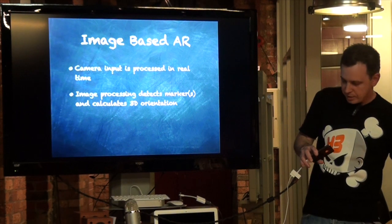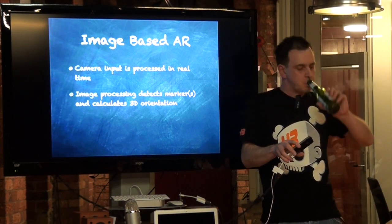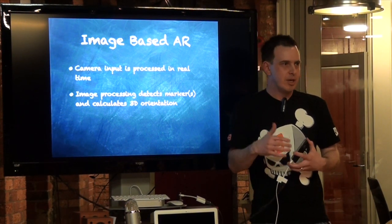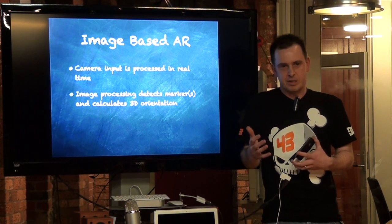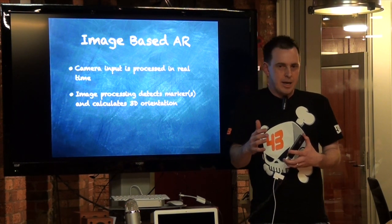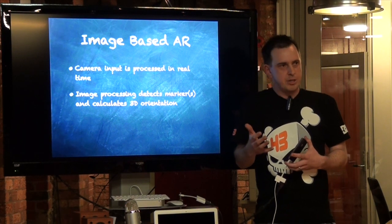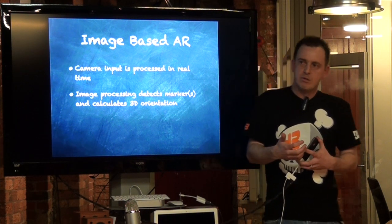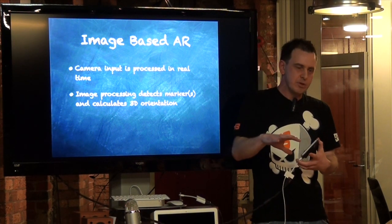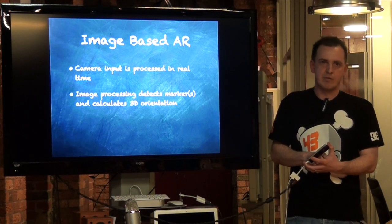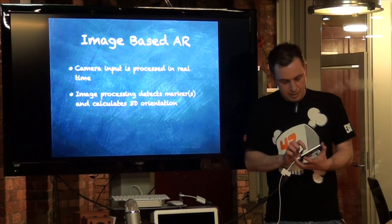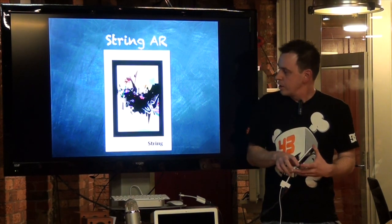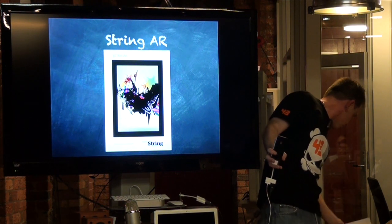What I'll mainly talk about today is image-based AR. This is where the camera input has to be processed in real time to look for predefined markers in the scene. It looks for those markers, determines their three-dimensional orientation when found, so the app can render things on top of or relative to those markers. The Sega Sonic one was obviously an example of that.